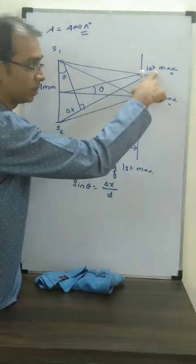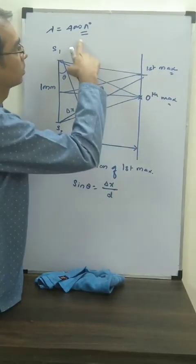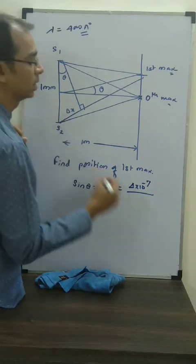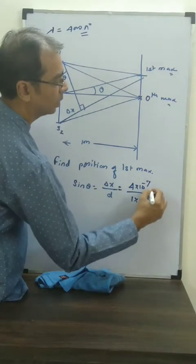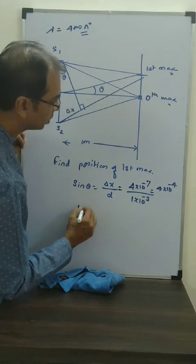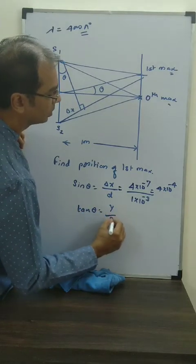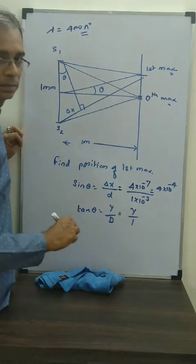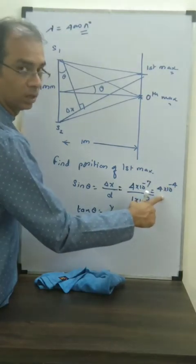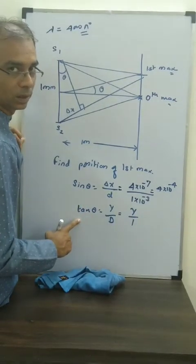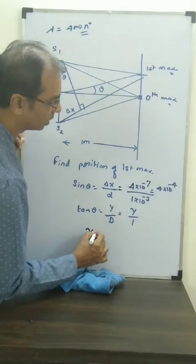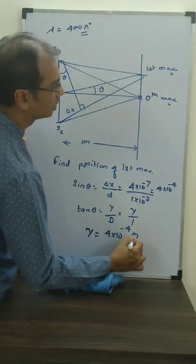For first maxima, delta x equals lambda, which is 4×10⁻⁷ m. So sin theta = 4×10⁻⁷ / 10⁻³ = 4×10⁻⁴. We also write tan theta = y / D, where y is what we want and D is 1 m. Since sin theta = 4×10⁻⁴ is very small, we can say sin theta ≈ tan theta. So y = 4×10⁻⁴ m.